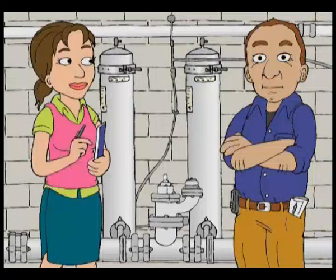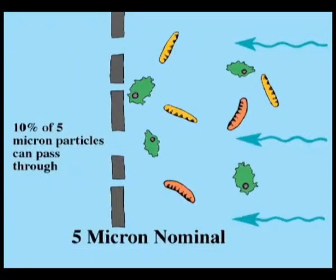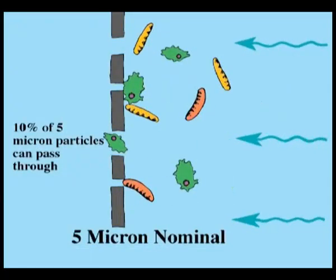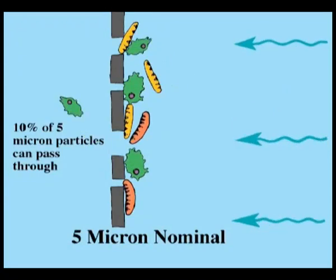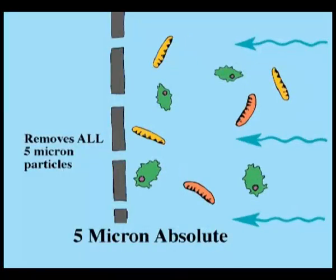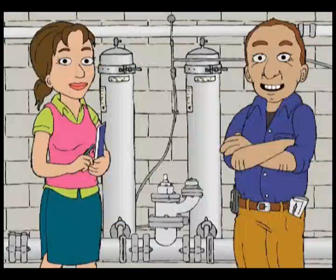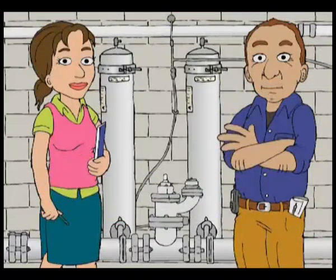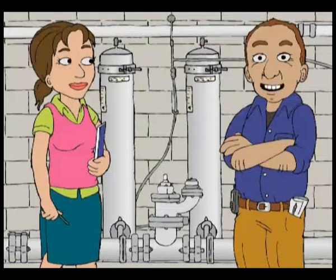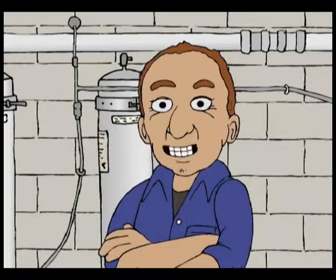Cartridges are categorised as either nominal or absolute. If a cartridge is 5 micron nominal, then it will remove 90% of the 5 micron sized particles — some will pass through. If it's 5 microns absolute, then it will remove all 5 micron sized particles. Some water supplies use a 20 micron cartridge filter to remove larger material, followed by a 1 micron cartridge filter which removes protozoa cysts. Usually the 20 micron will be nominal but the 1 micron cartridge will be absolute.